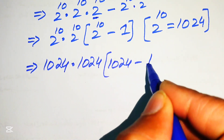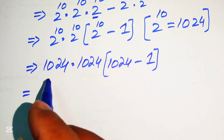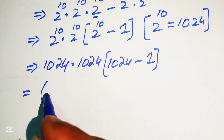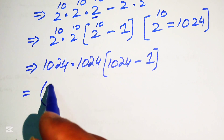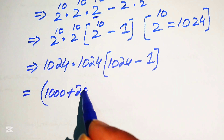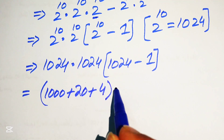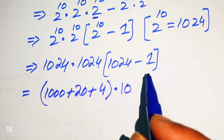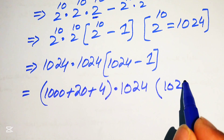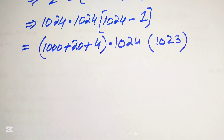We break 1024 into the hundreds and thousands form: 1000 plus 20 plus 4, which sums to 1024. This is multiplied by 1024, and then 1024 minus 1 becomes 1023. So now we need to multiply 1024 by 1023 without using a calculator.